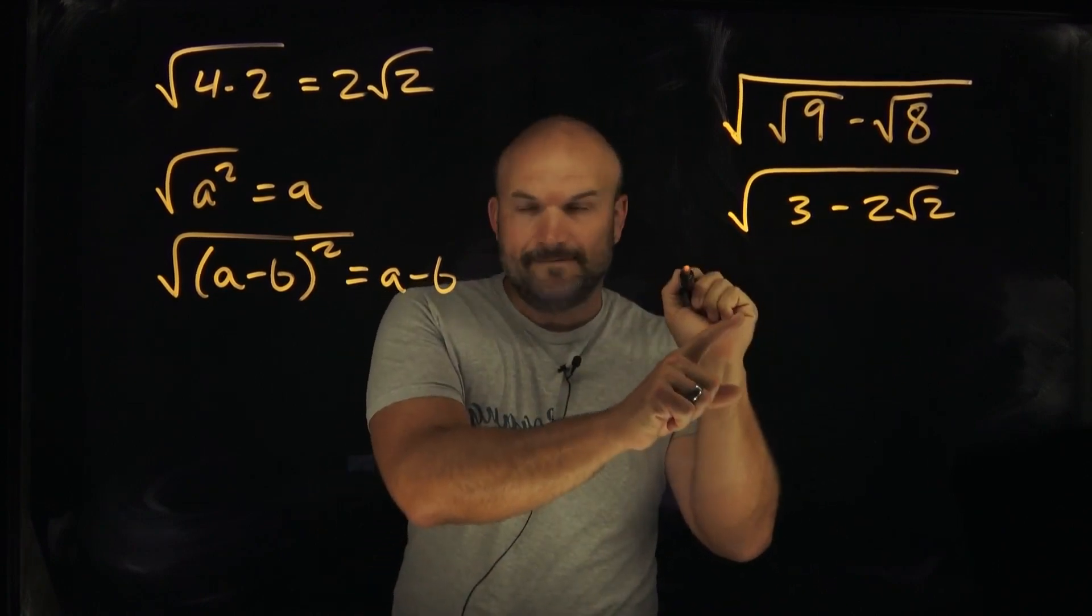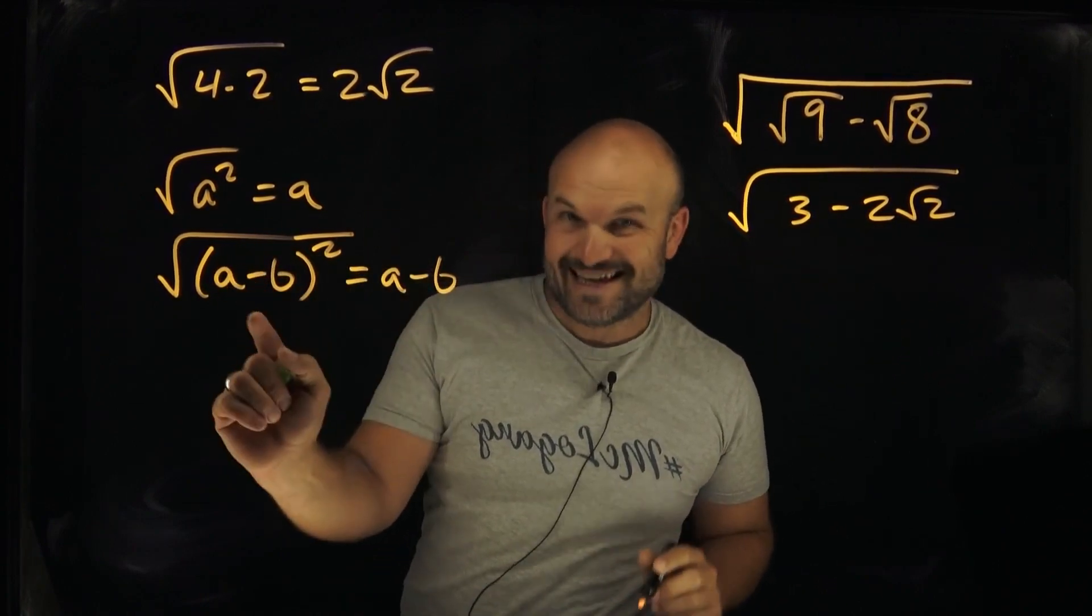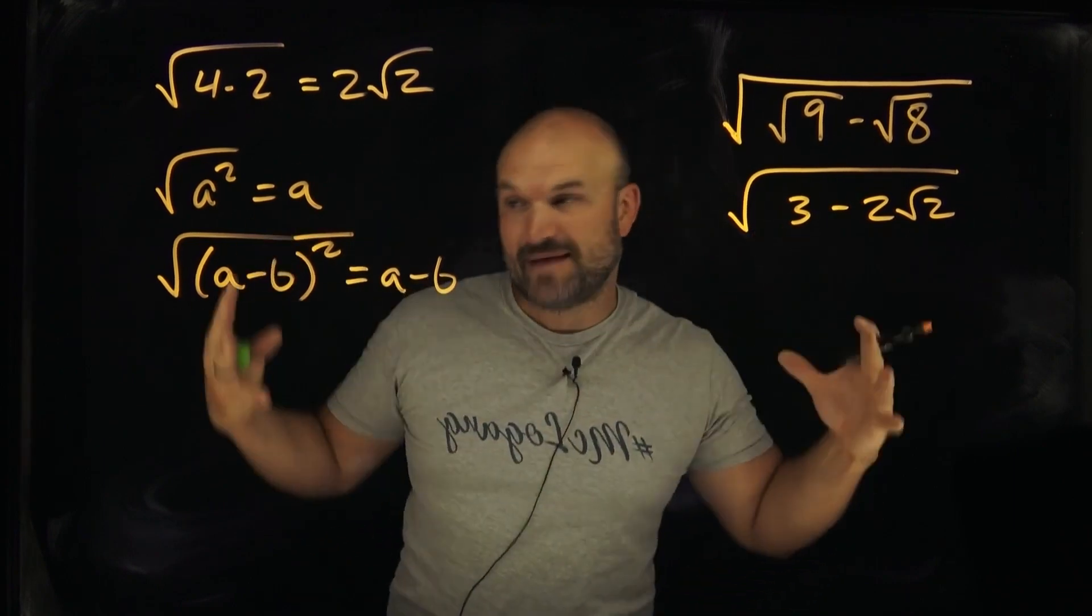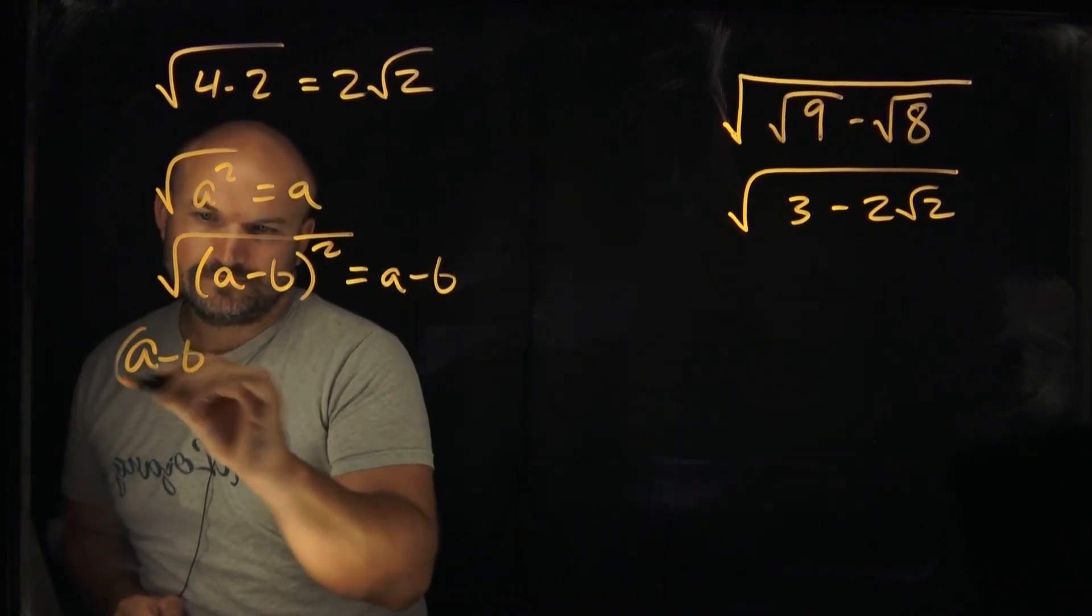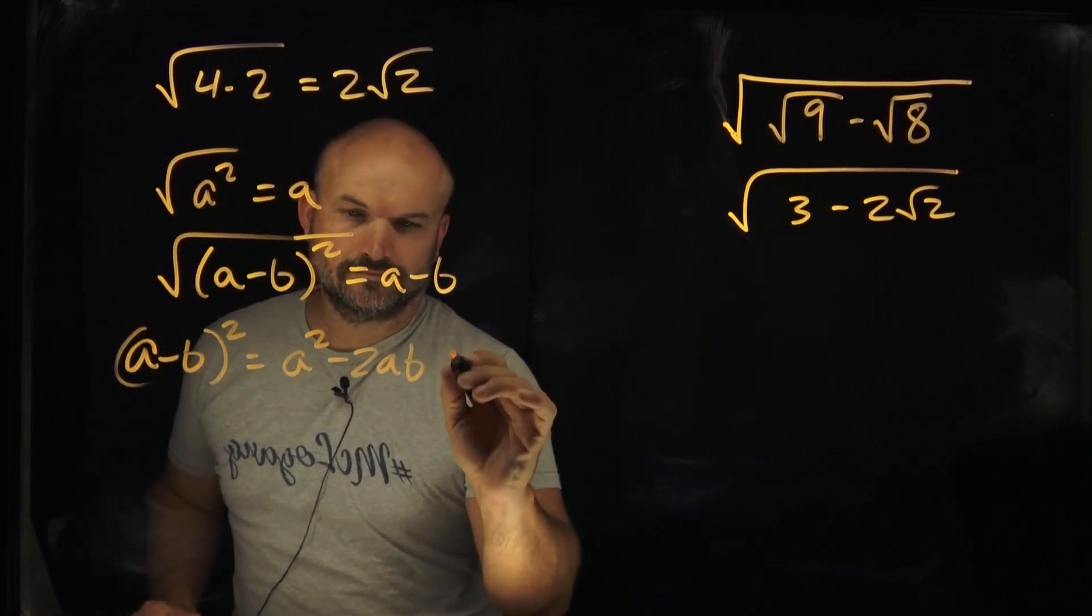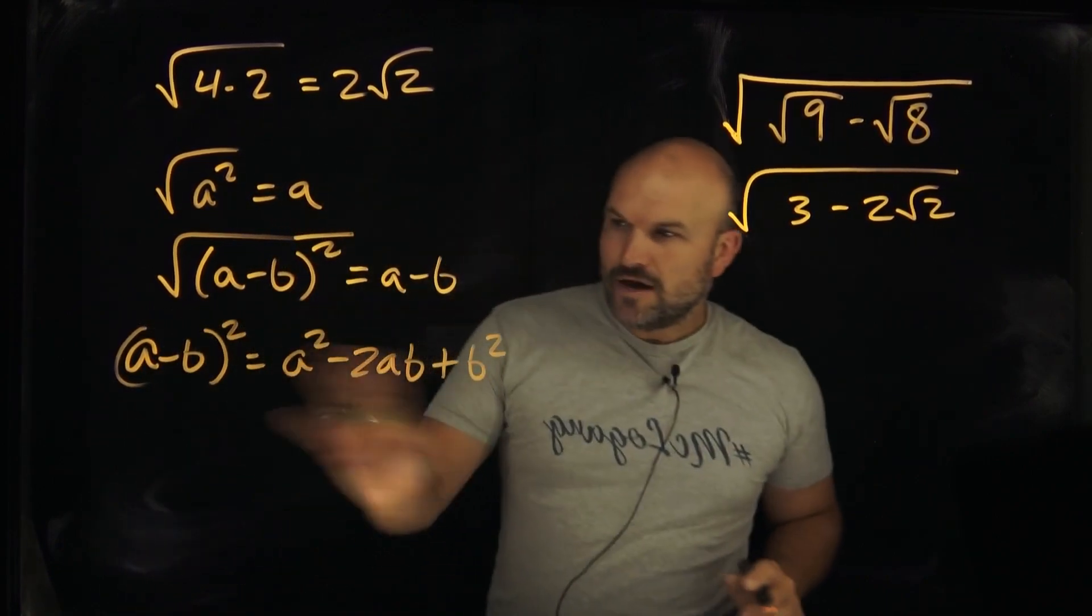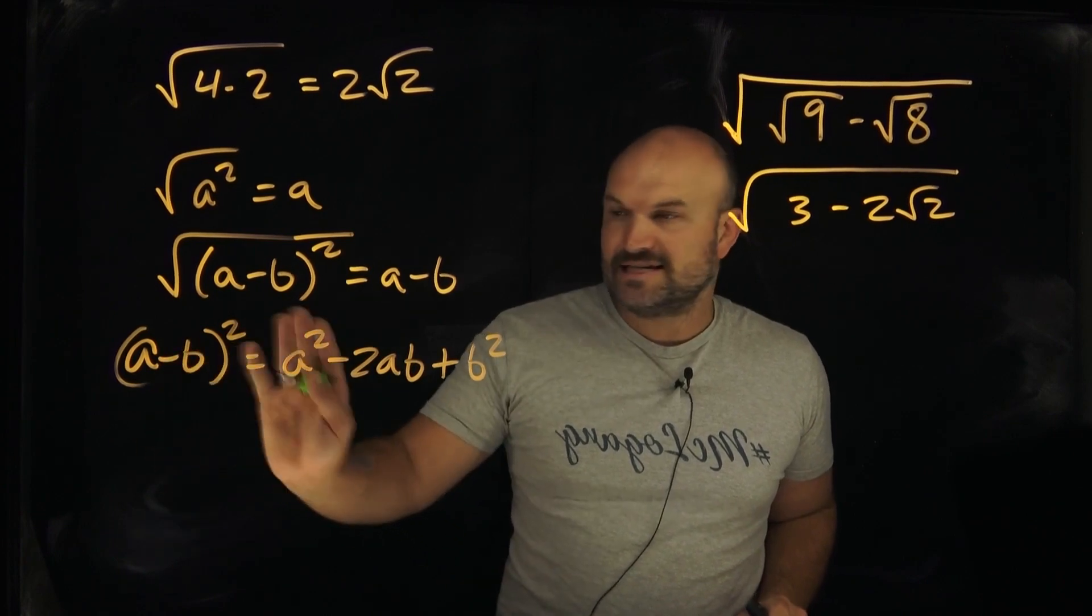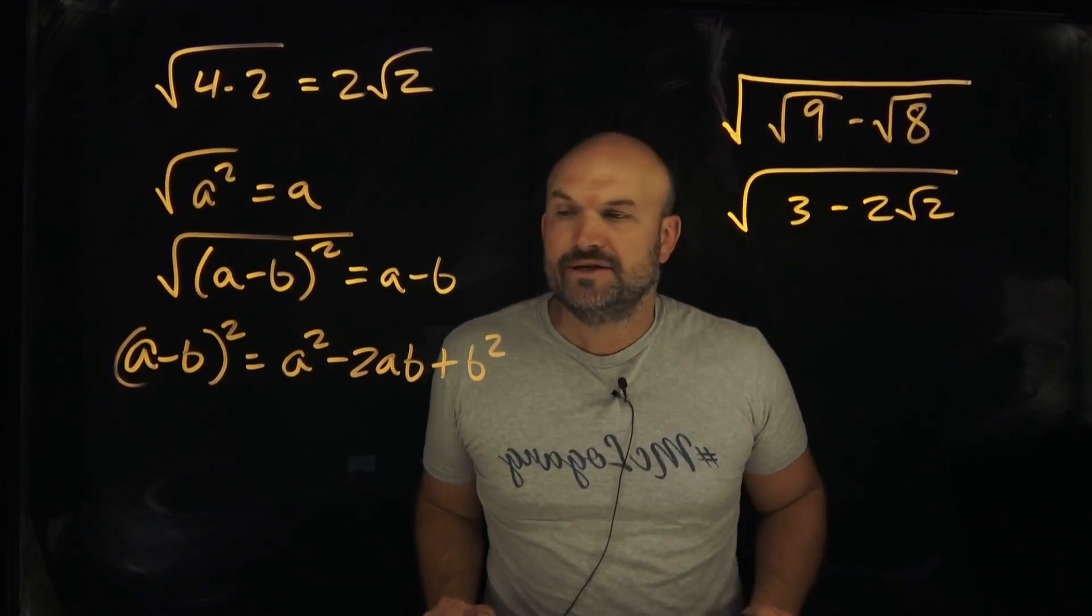What I need to do is I need to rewrite this. So it goes to my thinking, if I want it to be looking like this, then what does this look like when it's in its expanded form? And you say, okay, so a squared minus 2ab plus b squared.